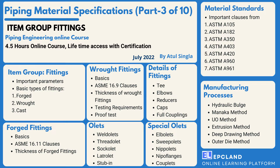In the first section on item group fittings, we'll understand various important parameters and types of fittings — forged, wrought, and cast. We'll look into the basics of forged fittings and the concept of B16.11 thickness of forged fittings. For wrought fittings, we'll cover basics, B16.9 clauses, thickness, testing requirements, and proof tests.